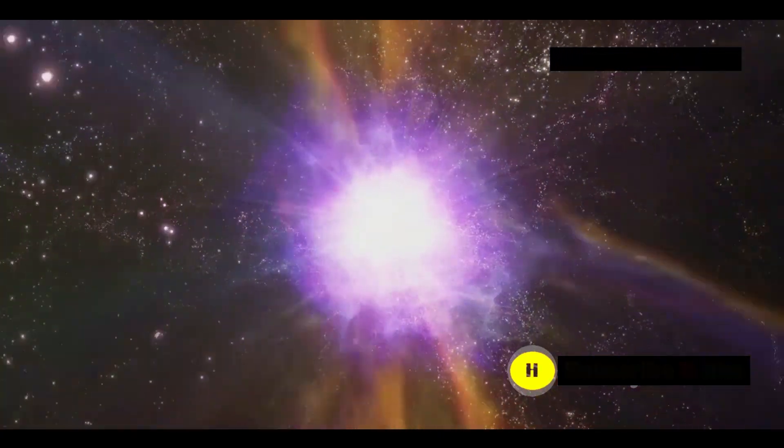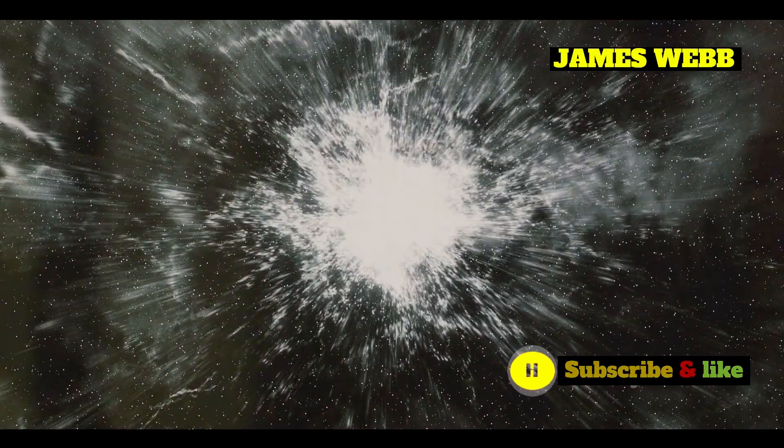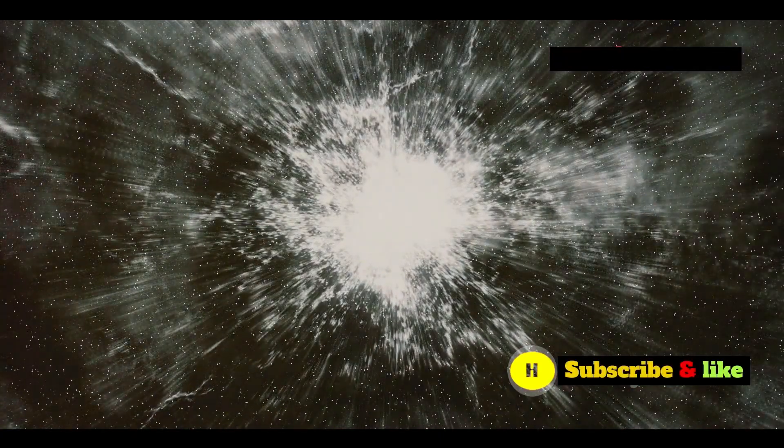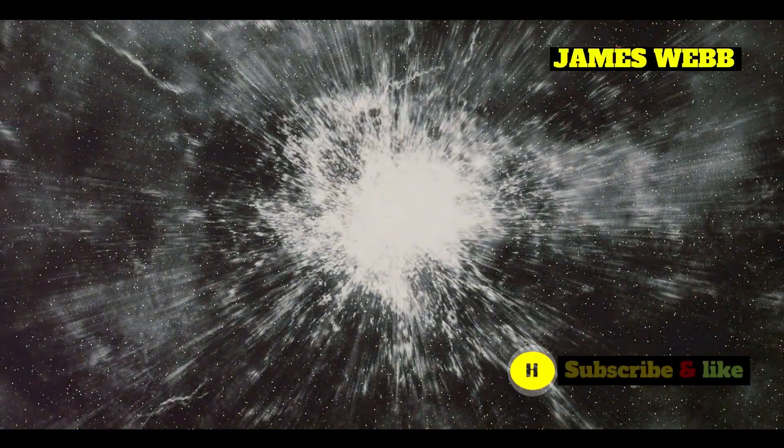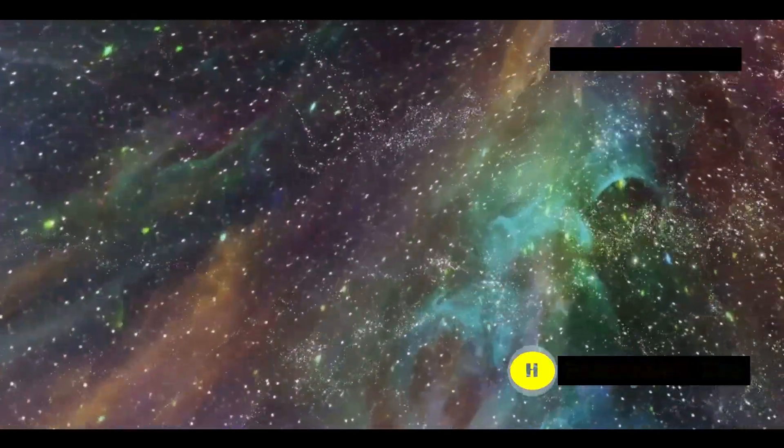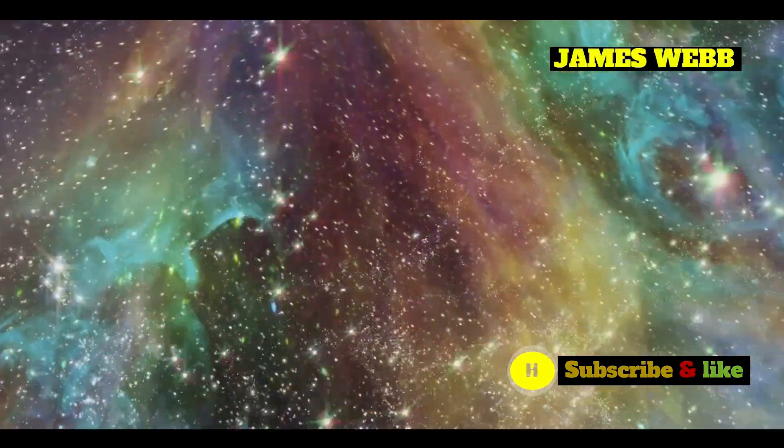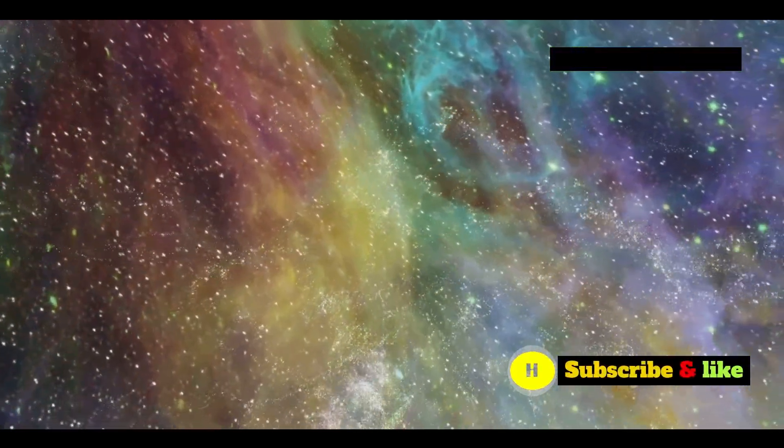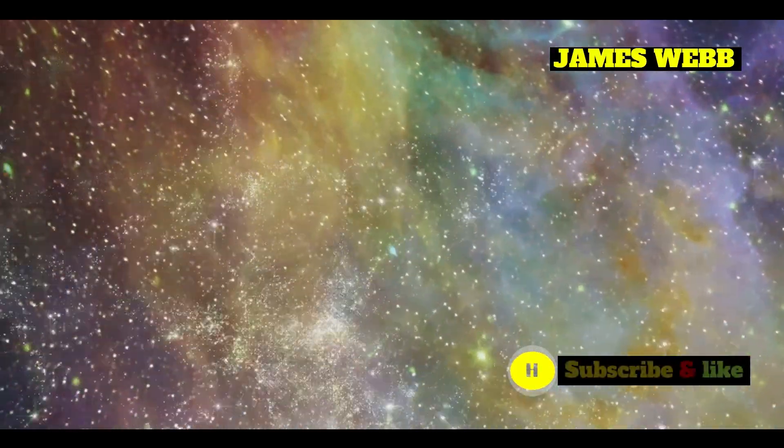One of the most confusing things about 55 Cancri E is the mystery surrounding its original atmosphere. Scientists believe that when the planet formed, it probably had a thick atmosphere made mostly of hydrogen and helium, much like the gas giants in our solar system.